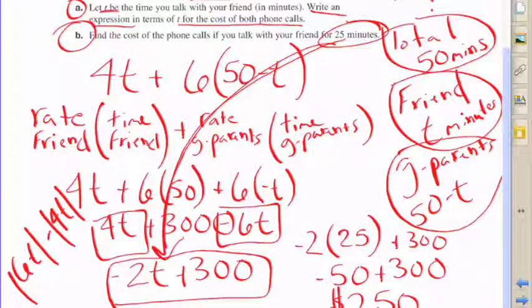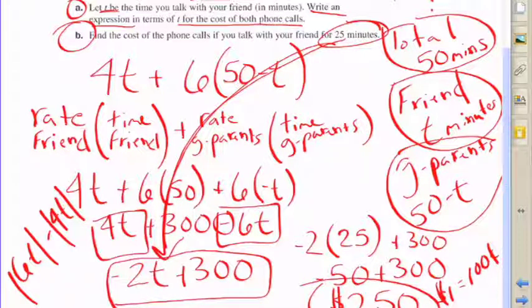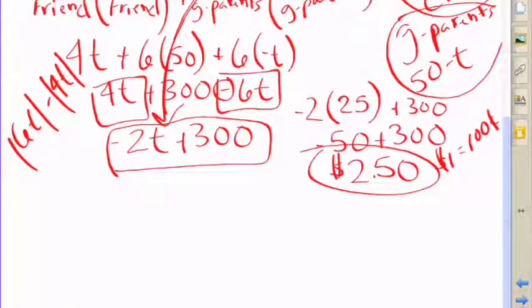Negative 50 plus the 300, and we have a final answer of 250. Remember, this is in cents, so that's 250 cents. We need to basically divide by 100, and you get two dollars and fifty cents. Not 250 dollars. Be careful, don't make that mistake. Make sure your answer makes sense.